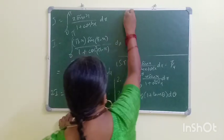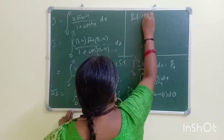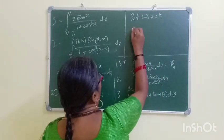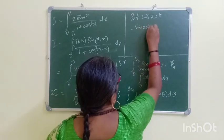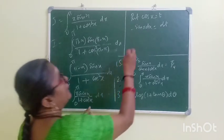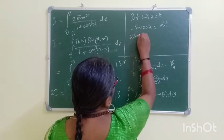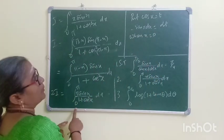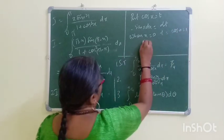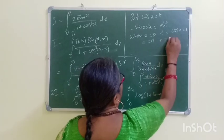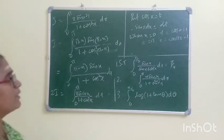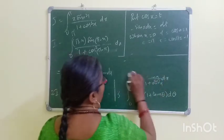Put cos x equal to t. So minus sin x dx equals dt, meaning sin x dx equals minus dt. Apply limits: when x equals 0, t equals cos 0 equals 1. When x equals π, t equals cos π equals minus 1.